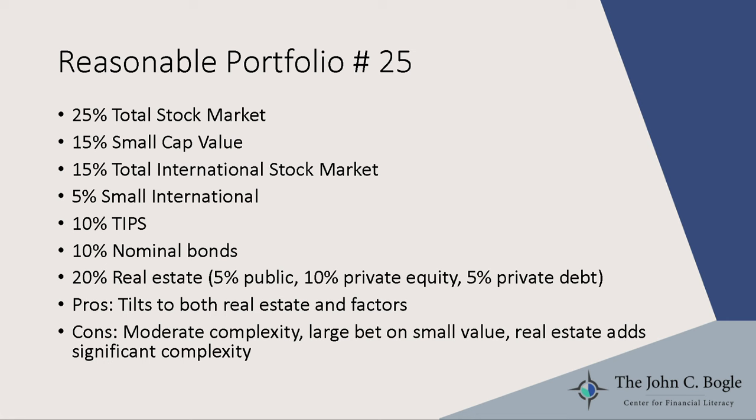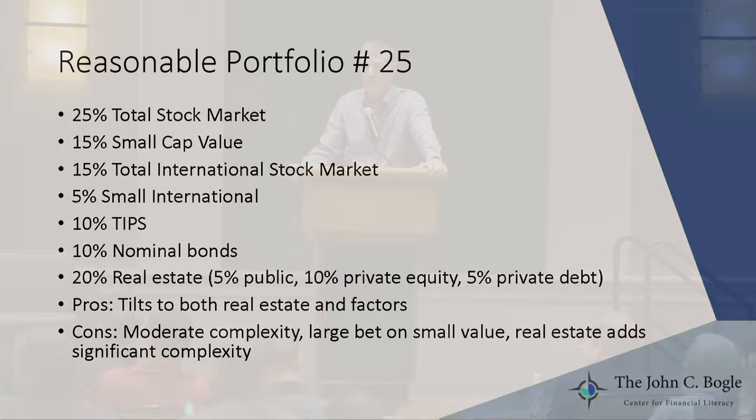This one is actually my portfolio: 25 percent in the total stock market index, 15 in small cap value, 15 in total international stock market, 5 in small international, 10 in TIPS, 10 in nominal bonds, and 20 in real estate split between public and private. The pros: tilts to real estate and factors if you believe in that. The cons: it's a moderately complex portfolio — very complex if you use private real estate — and it's a pretty big bet on small value, which since I started investing in 2004 has not paid off. Paul Merriman's advocating for this approach next door; Rick Ferri is arguing against it. I still think it'll pay off during my investing horizon, but there's no guarantee — welcome to factor investing.